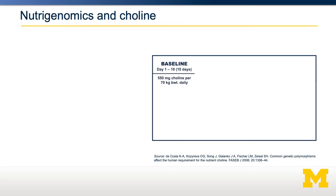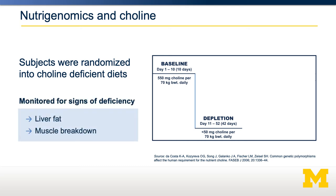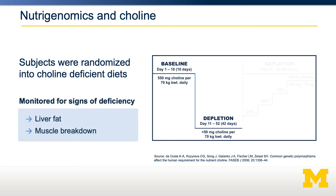This has been tested several times, including by this particular study design. Shown here is a study where for 10 days people were given a baseline diet with sufficient amounts of choline. They were then randomized into a choline deficient diet, involving depletion of choline for about 6 weeks. They were monitored for signs of choline deficiency, including liver fat and muscle breakdown, and then refed choline to see if those phenotypes went away. It turned out some people had phenotypes associated with choline depletion, and other people did not.